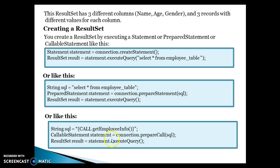If you want to get the ResultSet using a CallableStatement, that is also possible. If you have a connection object, you call prepareCall and pass the SQL — which is the stored procedure call. CallableStatement is basically used to call a stored procedure or stored function in the database, which is pre-compiled and stored on the database server. When you call executeQuery on the CallableStatement object, you get the ResultSet. So these are the three ways to get a ResultSet object.